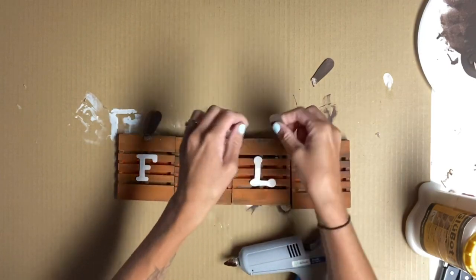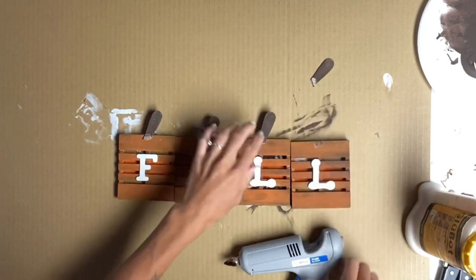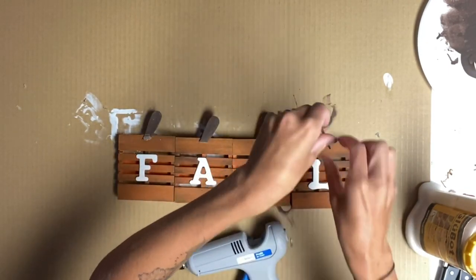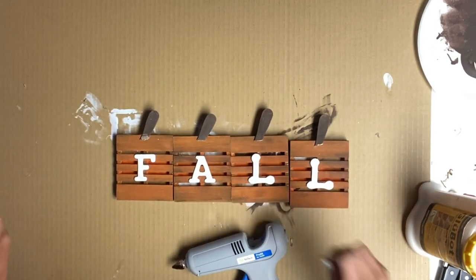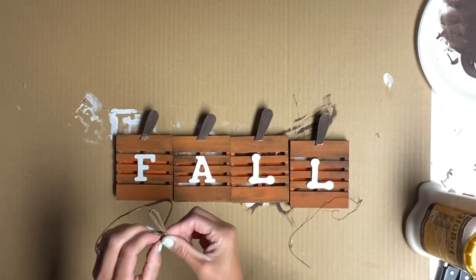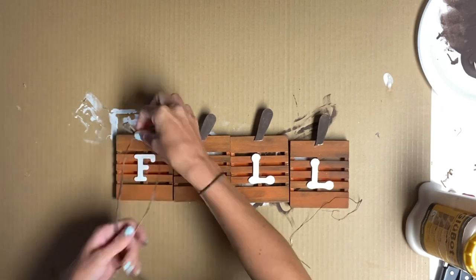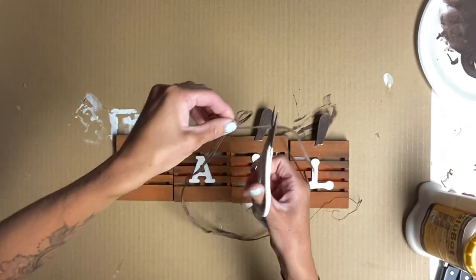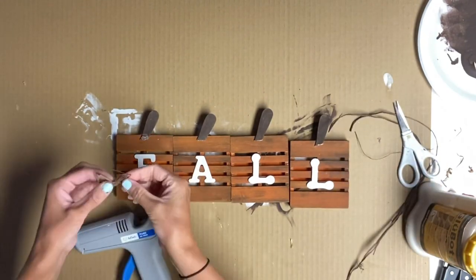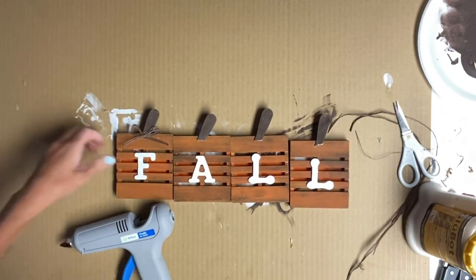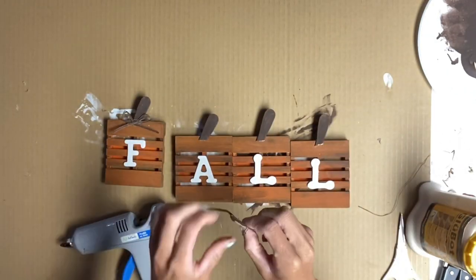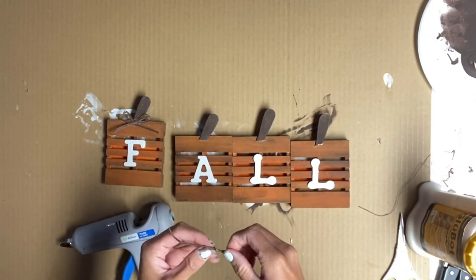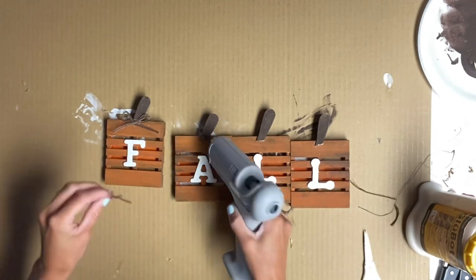I took the popsicle sticks, cut them in half, and then hot glued each one to the top of the wood palette. I also got this raffia from the Dollar Tree, and I just tied a small bow with the raffia. Using the hot glue, I attached the bow at the bottom of the popsicle stick. I did this on each popsicle stick.